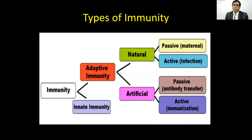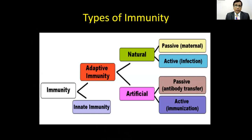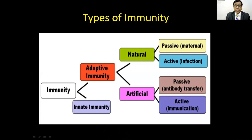The types of immunity are two: innate immunity and adaptive immunity. Innate immunity is automatic in the human body. It is the body's barrier system — anatomical barrier, physiological barrier, and cellular barrier.